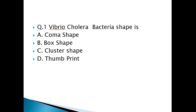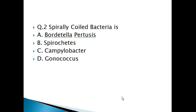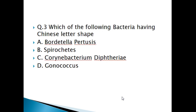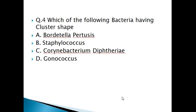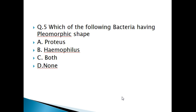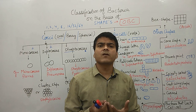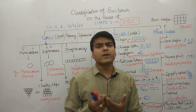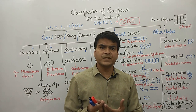Now let's look at some practice questions. Question 1: Vibrio cholerae bacteria shape is — answer: comma shape. Question 2: Spirally coiled bacteria — answer: Spirochetes. Question 3: Chinese letter shape bacteria — answer: Corynebacterium diphtheriae. Question 4: Cluster shape bacteria — answer: Staphylococcus. Question 5: Pleomorphic shape bacteria — answer: both Proteus and Haemophilus. Please answer in the comment box, like, share, and subscribe to the channel.